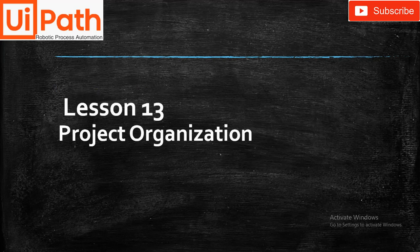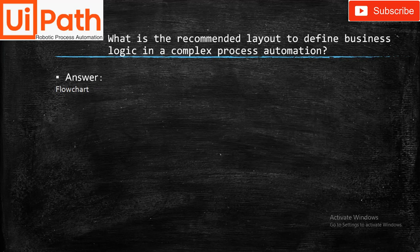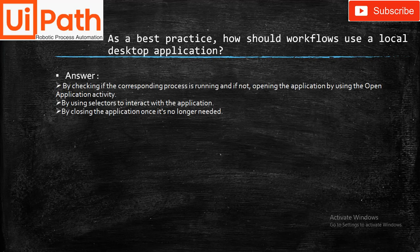Lesson 13 covers project organization — the last lesson in the certification program. After this you receive the final certification. What is the recommended layout for defining business logic in complex process automation? Answer: Flowchart. As a best practice, how should workflows use a local desktop application? Check if the corresponding process is running; if not, open it using the Open Application activity.